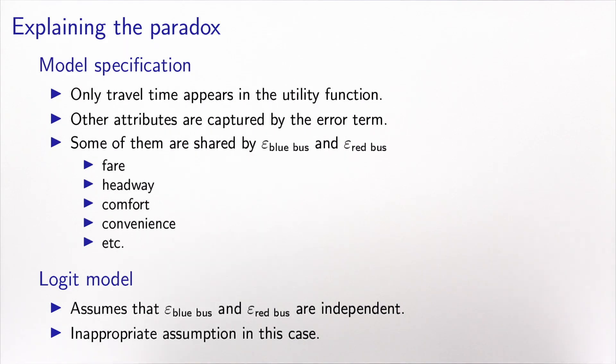In our model specification, only travel time was included in the utility function. But there are other attributes that people use to make a decision with respect to transportation mode choice. And all these other attributes, which do not appear explicitly, are considered to be captured by the error terms.